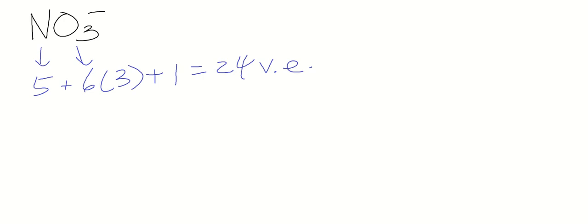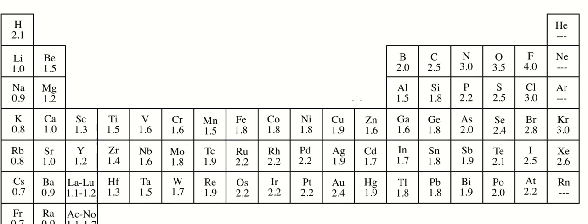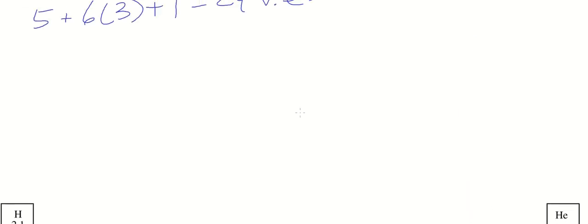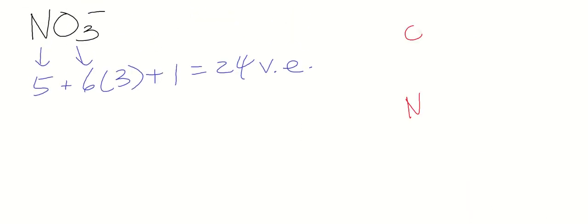Let's put nitrogen in the center because it has a lower electronegativity. The oxygen has a second highest behind fluorine. So the less electronegative element goes in the center, and we'll put the three oxygens around it.